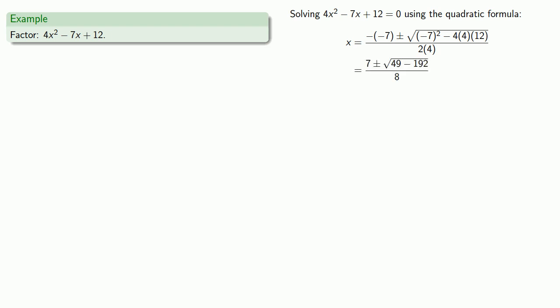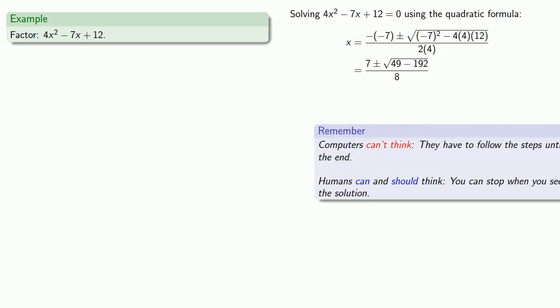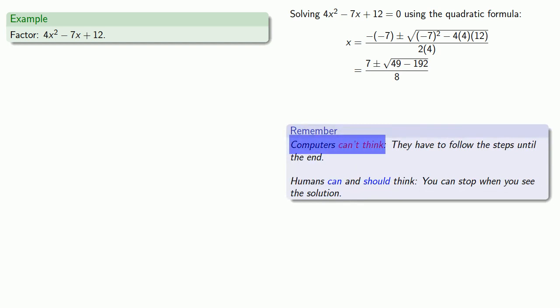Before we go on, it's useful to keep in mind two important ideas. First, computers can't think. They have to follow steps until the end. And the only reason that works is they can follow steps very quickly and accurately. On the other hand, humans can and should think, and what that means is you can stop when you see the solution.